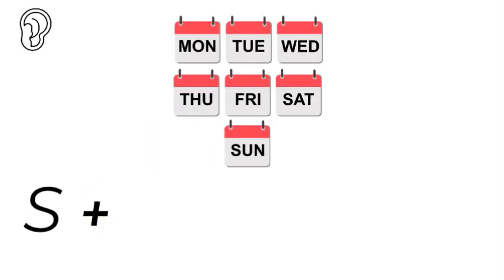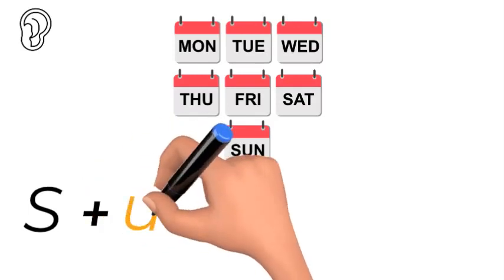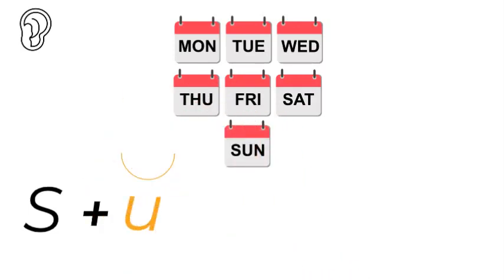It has an uppercase letter at the beginning, 's', followed by a vowel sound. 'A' for apple, 'e' for egg, 'i' for... 'o' for orange, and 'u' for umbrella. This is 'u' for umbrella.